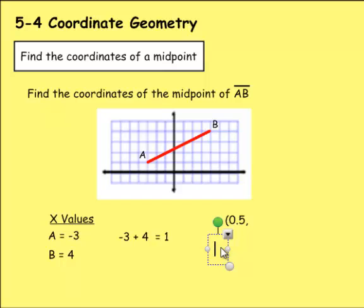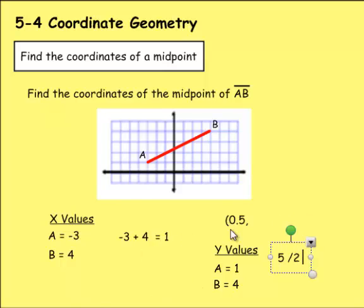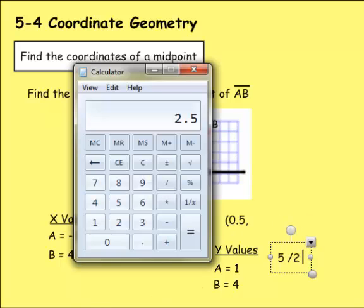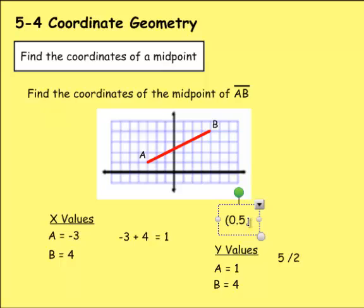Now let's find the Y values. So A for the Y value would just be 1. B would be 1, 2, 3, 4. If we're going to find the mean or the average between these two, we would add them together and divide by 2. 1 plus 4 is 5. So 5 divided by 2. 5 divided by 2 is 2.5.